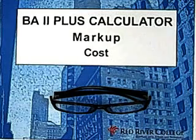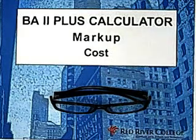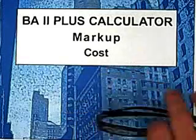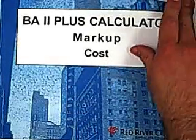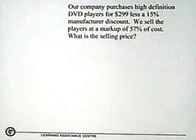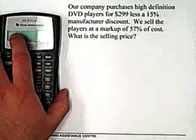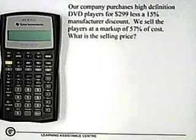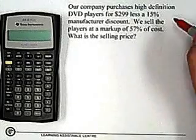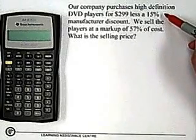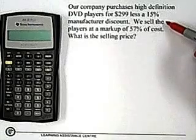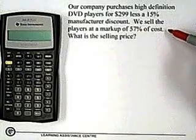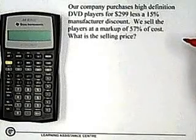Welcome to another in the BA2 Plus calculator series for the Wise Guys Tutoring videos. In this one we're going to be looking at markup based on cost. Our company purchases high definition DVD players for $299 less a 15% manufacturer discount. If we sell the players at a markup of 57% of cost, what is the selling price?